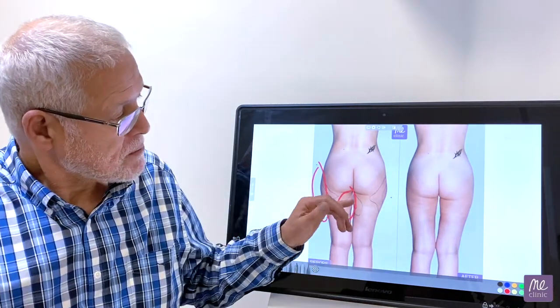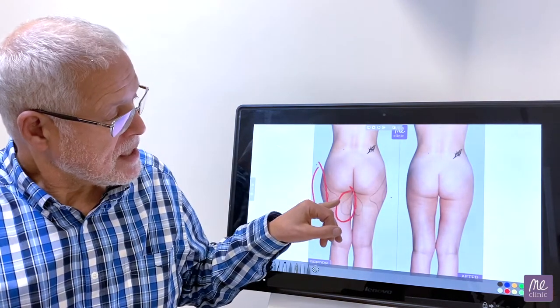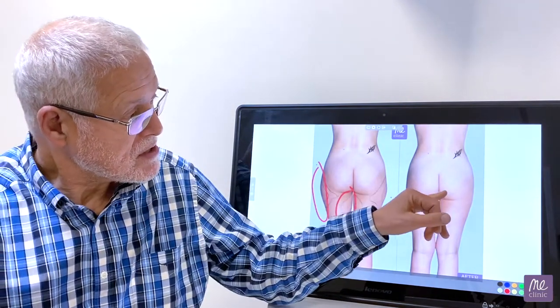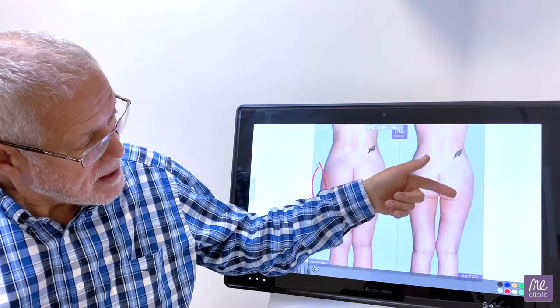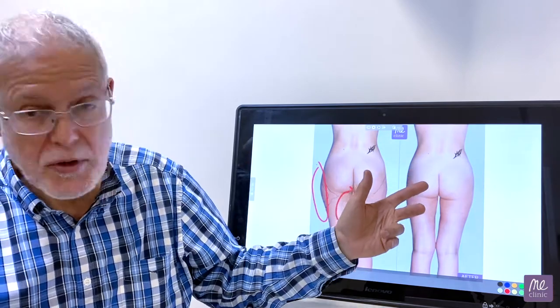We did the liposuction liposculpture on the outer thighs and inner thighs, and this is the difference. The whole idea is to try to make a nice contour, and that's what she's got now. You could say, well, could I have operated upon her in other areas?